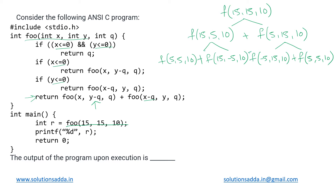We have now got four recursive calls and the values returned by all four will be added together. Looking at f(5, 5, 10) separately, none of the conditions are satisfied, so two more function calls will be made.